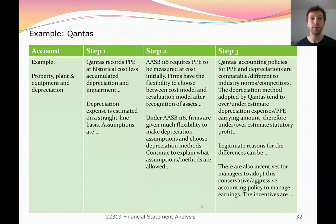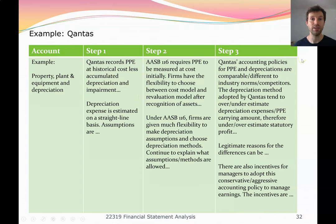To summarize the first three steps, we can present a simple table for each account. For Qantas's property, plant and equipment: we've identified it as a key balance sheet item, discussed how it's recorded, noted the applicable accounting standards and the flexibility available, and then in step three we compare to competitors to see if it differs from industry norms and assess whether Qantas is accounting in a transparent and accurate manner.